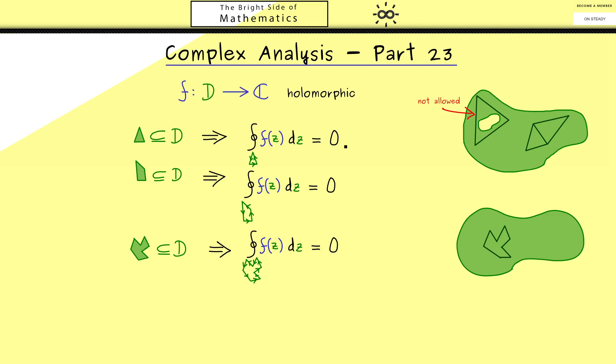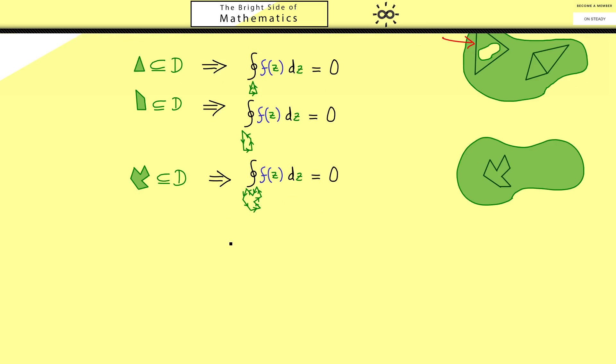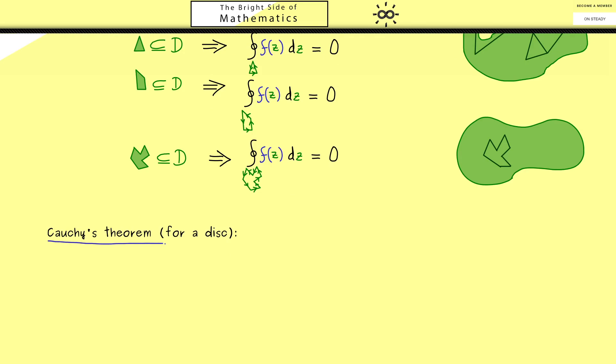Of course, the only thing we need here is that the inner part of the polygon lies completely in D. And then we just apply Goursat's theorem finitely many times to get the result here. So you see, this is immediately a nice generalization we get here, but you also see, we can't say anything about a disk. More precisely, if the curve is a circle, we cannot conclude that the curve integral is also zero, yet. Indeed, now with Cauchy's theorem we can conclude that this curve integral is zero for a lot of closed curves.